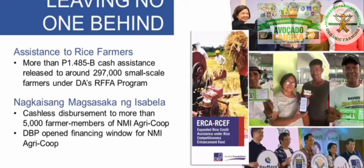DBP has signed an agreement with the DA for the distribution of 3,000 pesos each in cash subsidies to around 900,000 marginal farmers through an e-voucher system under the Cash and Food Subsidy to Marginal Farmers and Fishers program.